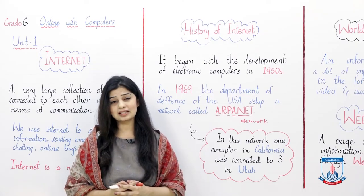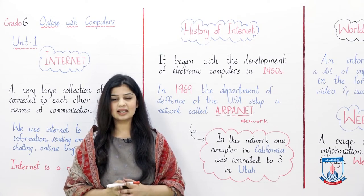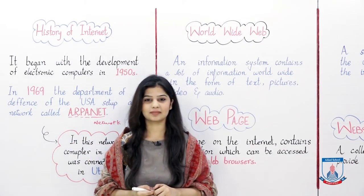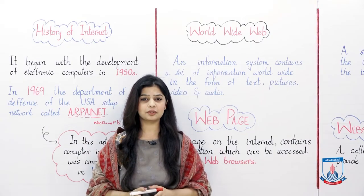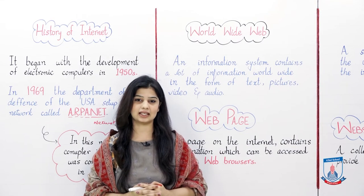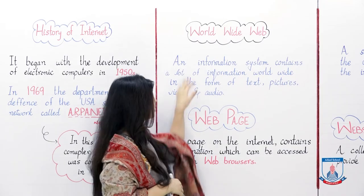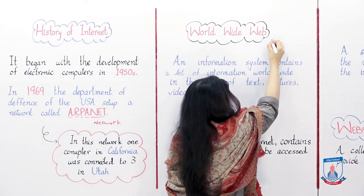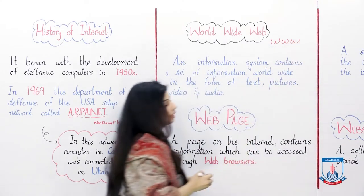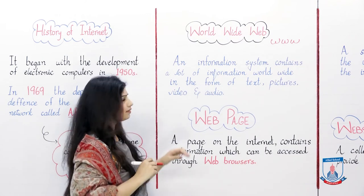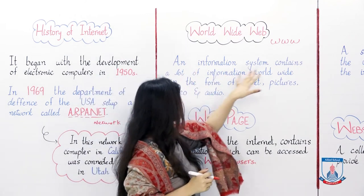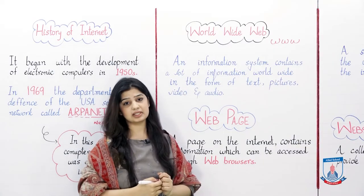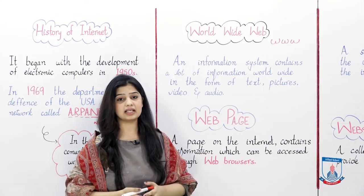Now we will see the basic terminologies relevant to the internet. The first terminology is World Wide Web. What is World Wide Web? We call it WWW. It is an information system that contains a lot of information worldwide — worldwide information is saved in it.